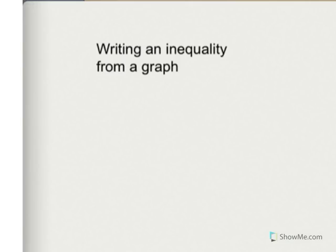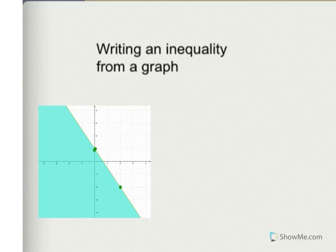Today we're going to look at how to write an inequality from a graph. The first thing we want to do is find two points that are on the graph that are very easy to spot. The first one I found is x is 0 and y is 1. The second one I found was x is 2 and y is negative 2.